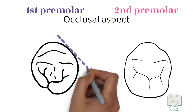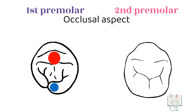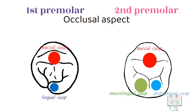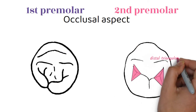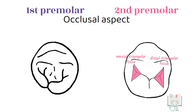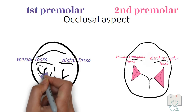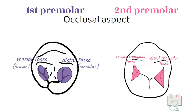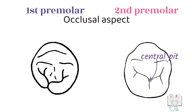Finally, the occlusal aspect. The outline form of the crown of the first premolar is diamond-shaped and that of the second premolar is square-shaped. In the first premolar both cusps are seen, whereas in the second premolar all three cusps are seen. In the second premolar, two triangular fossae — the distal triangular fossa and mesial triangular fossa — are present, whereas in the first premolar the mesial and distal fossae are not triangular but linear and circular, hence not called triangular fossae. The second premolar has a central pit in the middle of the occlusal surface, but in the first premolar no such pit is present.